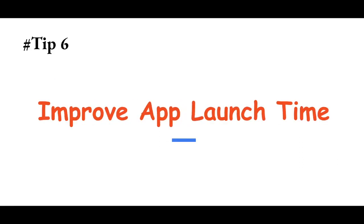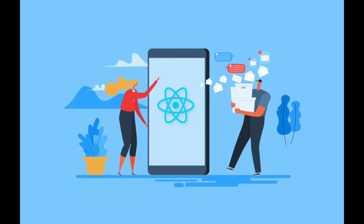Tip number six is: improve app launch time. If your app does not launch within a few seconds, there is a 99% chance you will lose your customer forever. Sometimes object finalization comes up with error messages such as insufficient memory and causes the app to close or crash. Avoid using the element object's finalize method to prevent slower launch times. By doing this your app launch time and overall app performance will be improved.